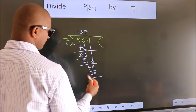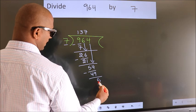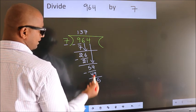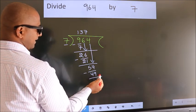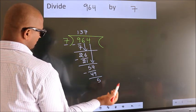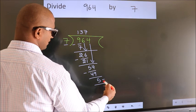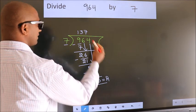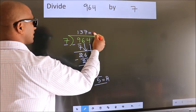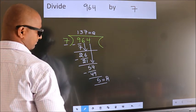Now we subtract. We get 5. No more numbers to bring down, so we stop here. This is our remainder. This is our quotient.